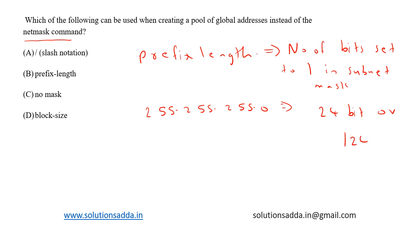Slash 24 means that there are 24 continuous ones in the subnet mask - that is, eight continuous ones here, eight continuous ones here, eight continuous ones here.